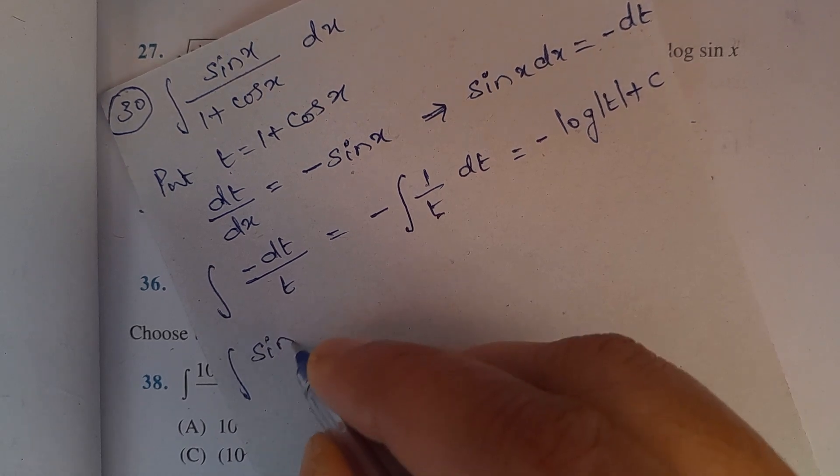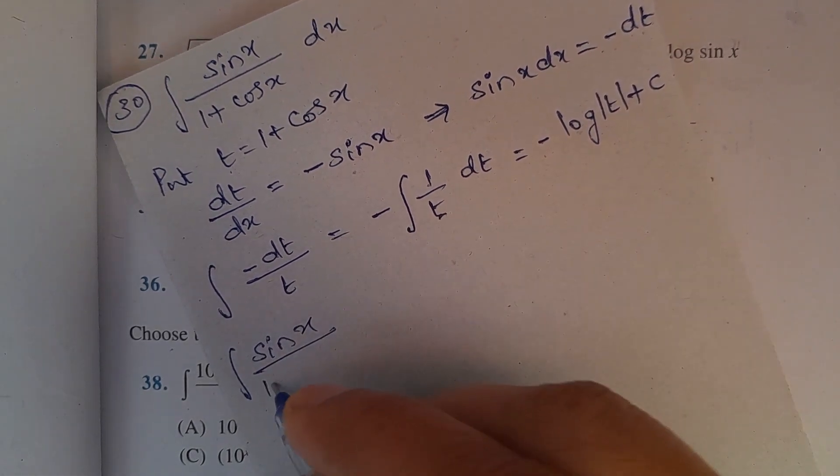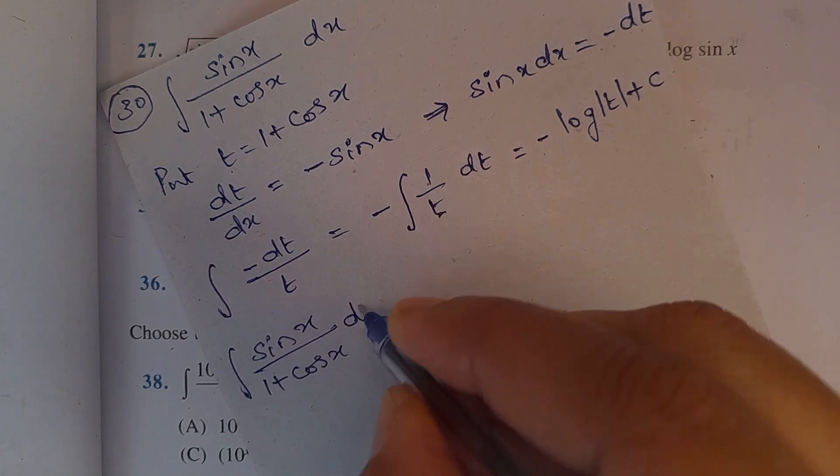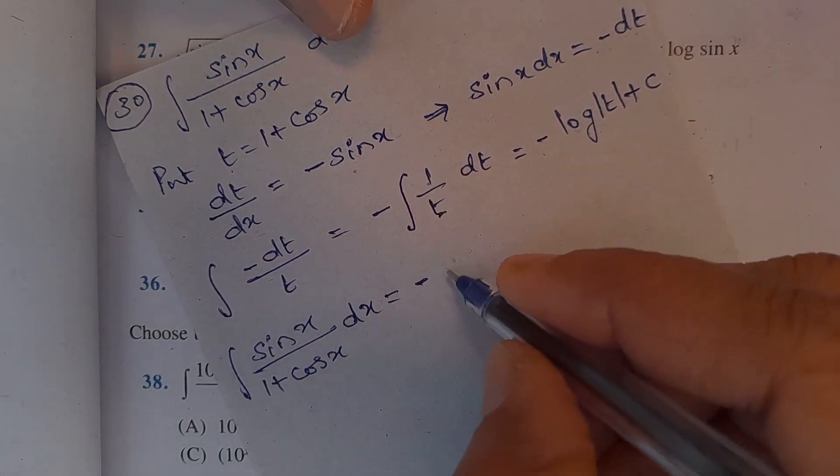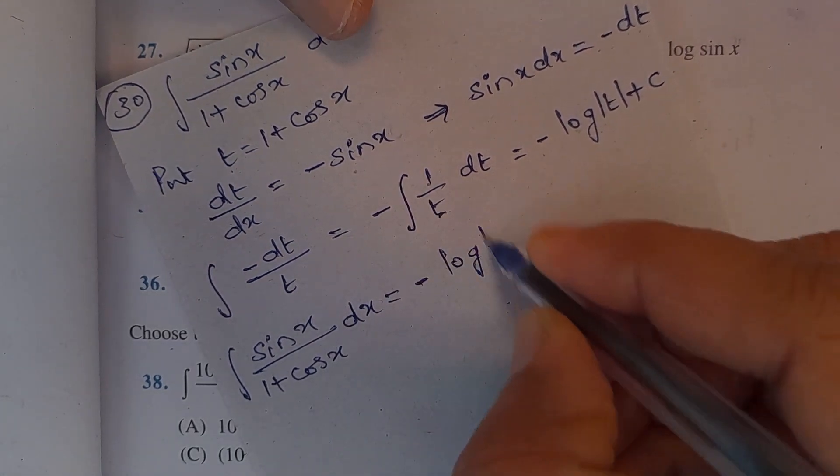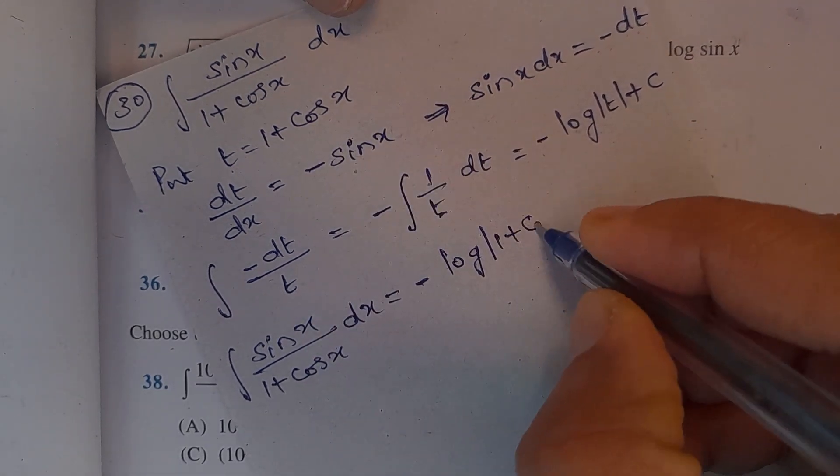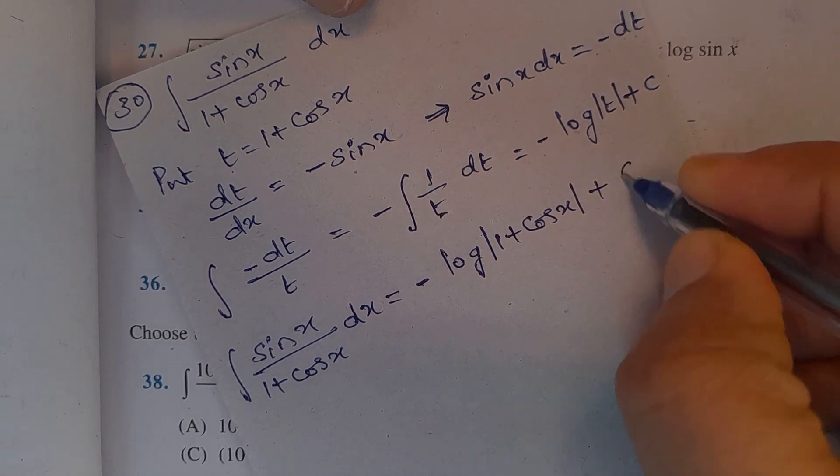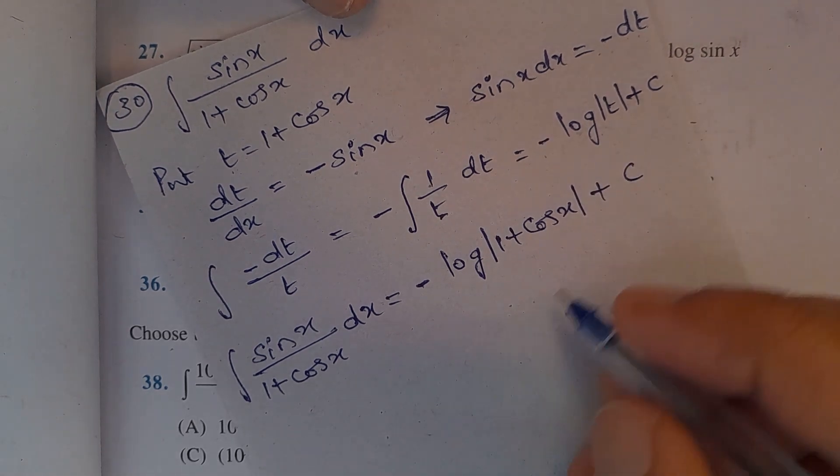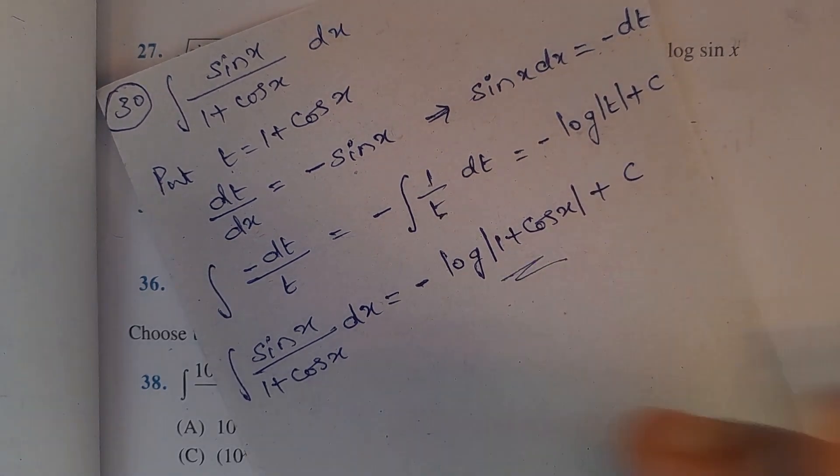Integral of sin x divided by 1 plus cos x dx equal to minus log magnitude of t is 1 plus cos x plus constant of integration. This is the final answer for this one.